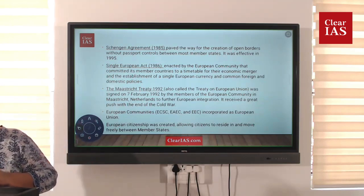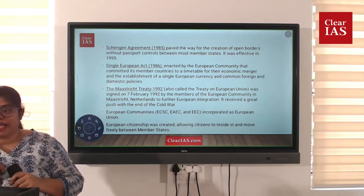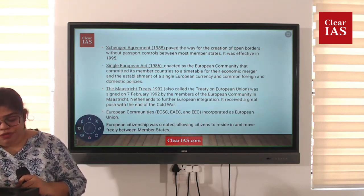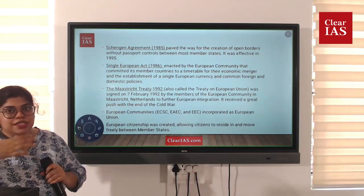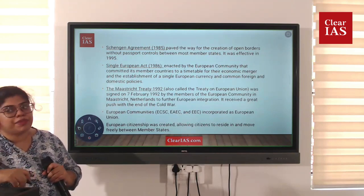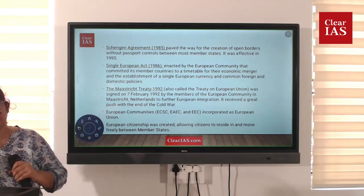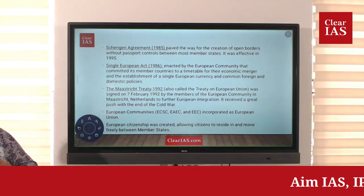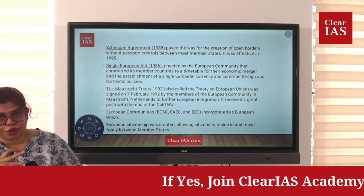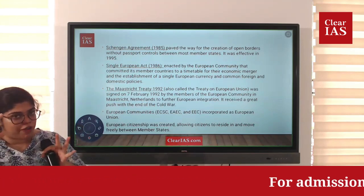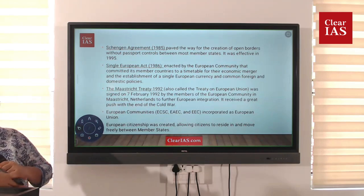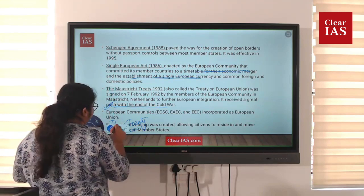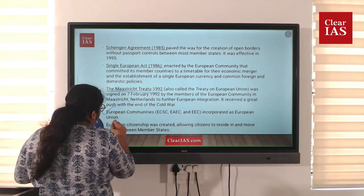The Single European Act means the member countries will have a timeline for their economic merger and establishment of a single currency to be used for foreign and domestic policies — it is essentially a move to switch to a single currency over a period of time. The Maastricht Treaty of 1992, called the Treaty on European Union, incorporated all European Communities into the EU, and European citizenship was created so citizens can move freely from one country to another.